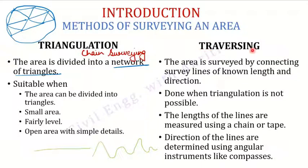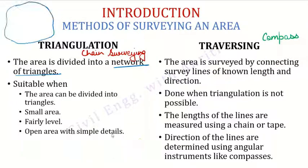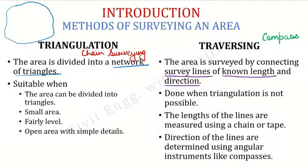Now let's talk about traversing. Compass surveying is based on traversing. The area is surveyed by connecting survey lines of known lengths and directions. In traversing, you draw survey lines, and the length and direction of those survey lines are known. For example, if we label points A, B, C, D, E, F — then AB, BC, CD, DE, EF, and FA are all lines forming the traverse.